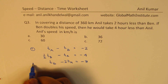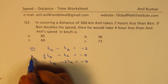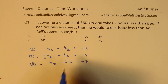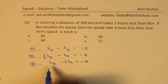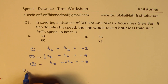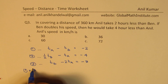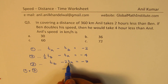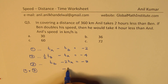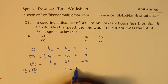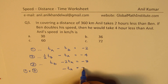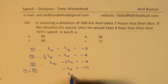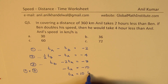Now if we add equation one and equation three, the time for Ben cancels out. Adding gives: minus T_A plus minus T_A, which is minus 2·T_A, equals minus 2 plus (minus 8) equals minus 10. So the time for Anil is 10 hours.